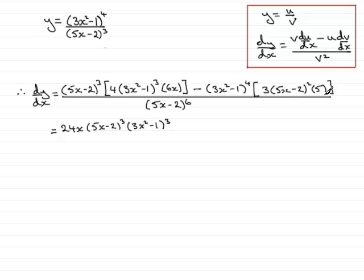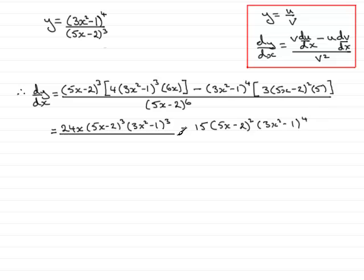Now looking at the second term, 3 times 5 is 15, so we have minus 15, then (5x minus 2) all squared, and then (3x squared minus 1) to the power 4. It's all divided by (5x minus 2) to the power 6. So we've gone through the next stage of cleaning up each term.